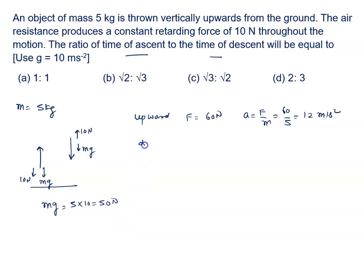But when the body is coming in the downward direction, the force acting on the body is given by Mg minus 10. Mg is 50, 50 minus 10, that is given by 40 Newton. So, acceleration when it is coming in the downward direction is 40 by M and it is given by 8 meter per second square.